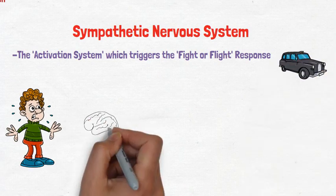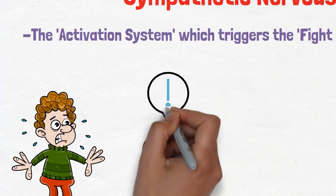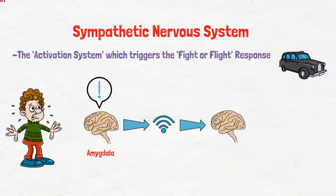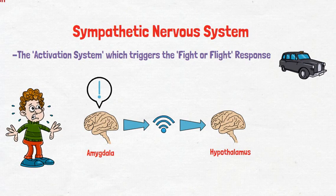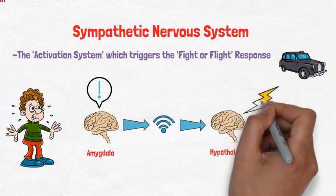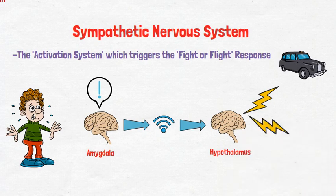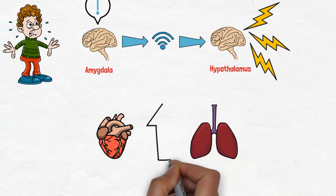When the amygdala, which can be thought of as the threat detection system in the brain, perceives a threat, it will send a distress signal to another brain structure called the hypothalamus. The hypothalamus, which is also very involved in learning and memory, is kind of like a control center which will activate the sympathetic nervous system by triggering the release of adrenaline via the adrenal glands. This then signals for all the other physiological components of the fight or flight response to kick into gear, such as increased heart rate, increased breathing rate, etc.